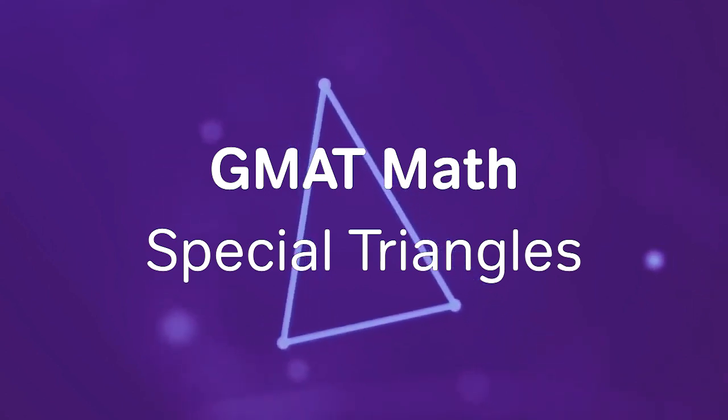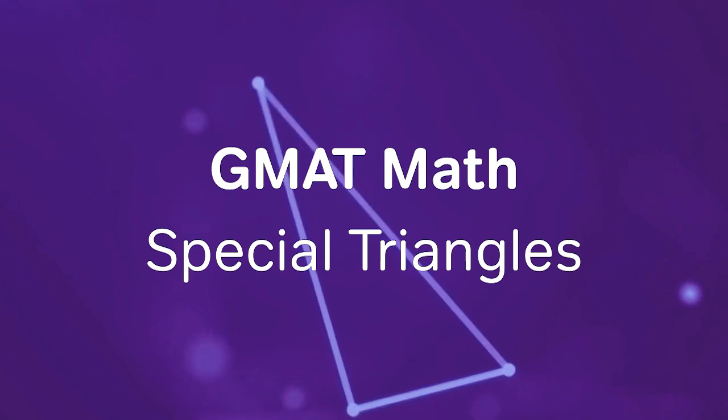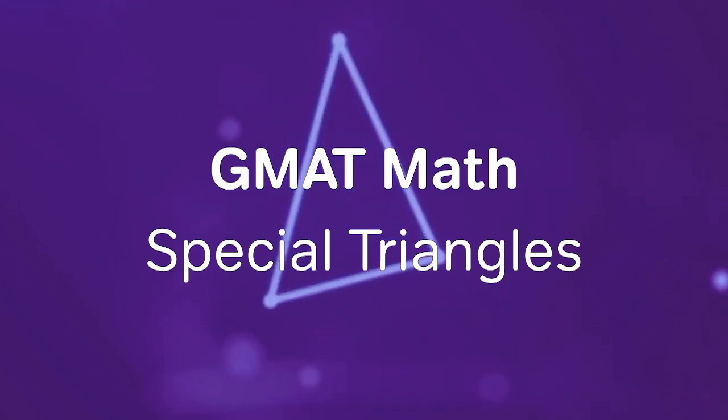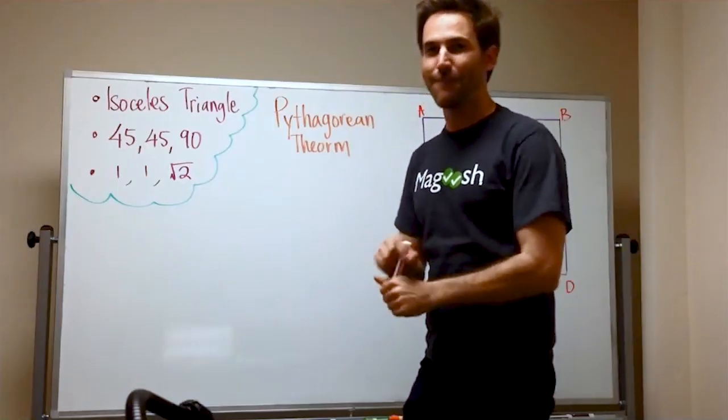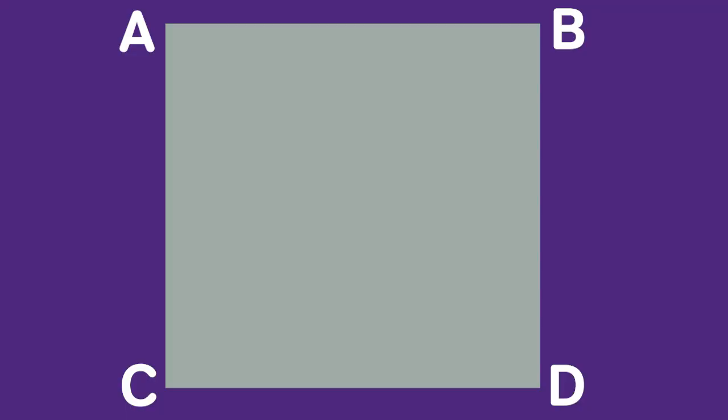Hello! So, triangles. One very special triangle that you need to know about on the GMAT can be derived from a square. And so we're going to start here with a square. And to make a triangle, it's very simple,